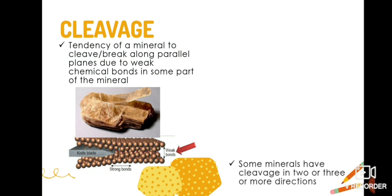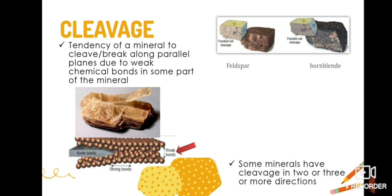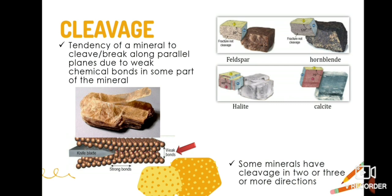While mica cleaves in one direction, both feldspar and hornblende cleaves in two directions. Halite and calcite both cleave at three directions. And lastly, we have fluorite, which cleaves in four directions.